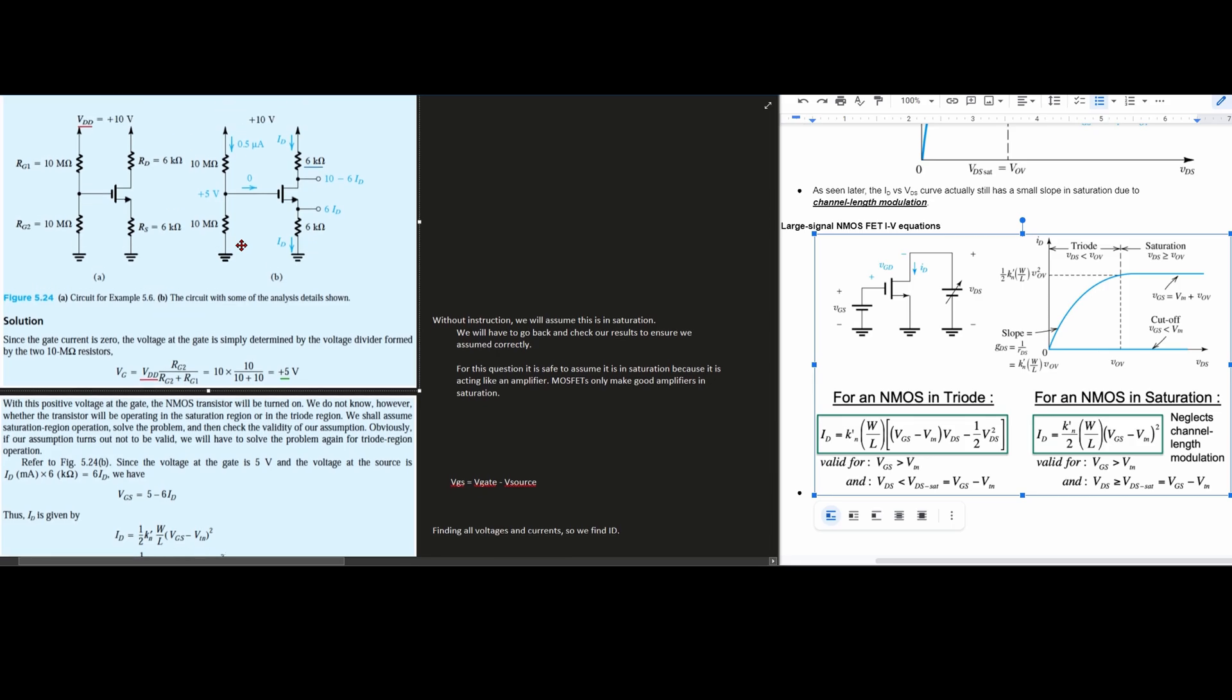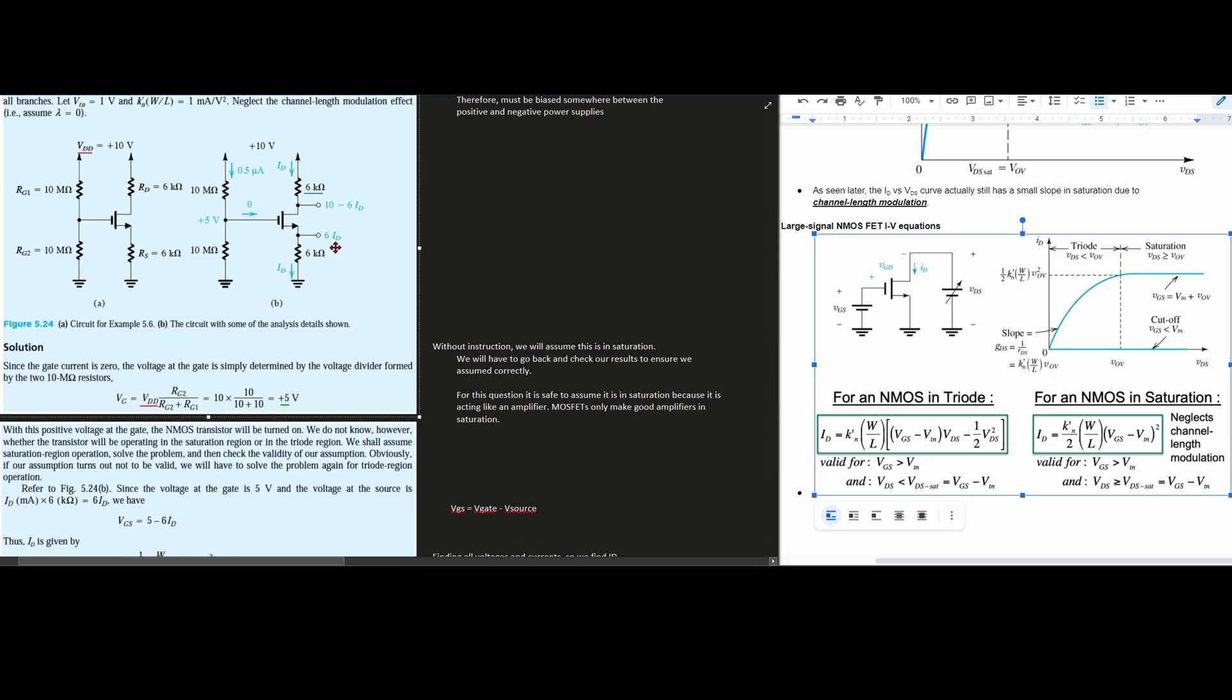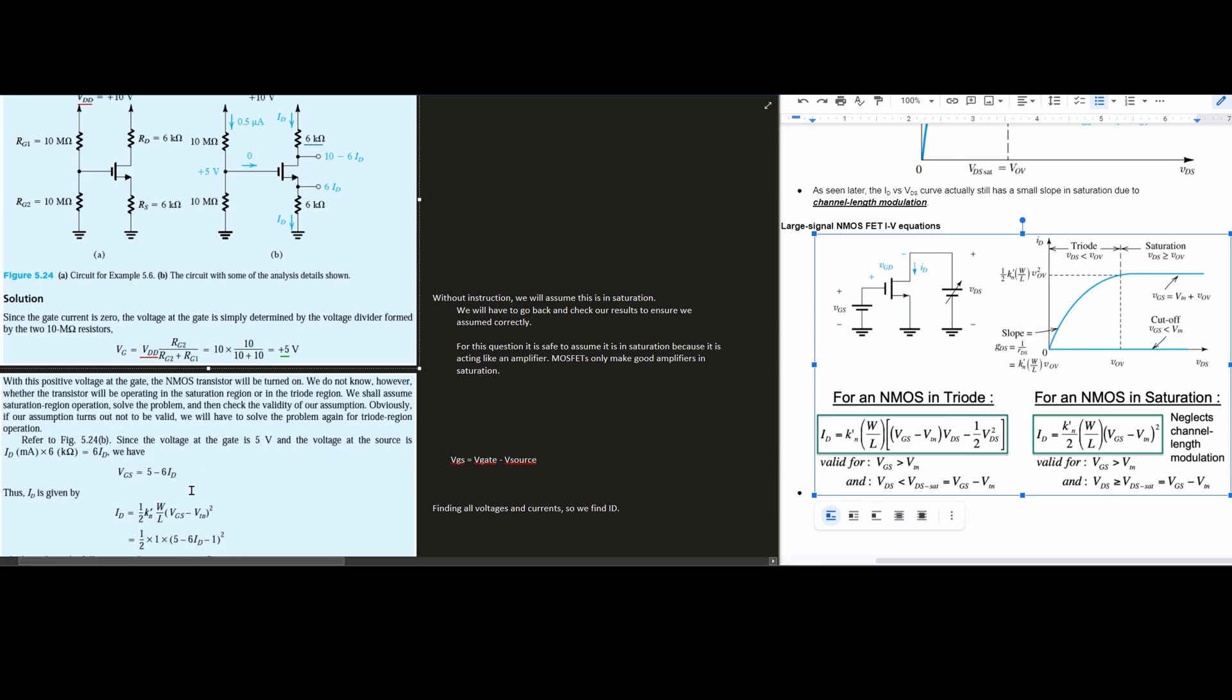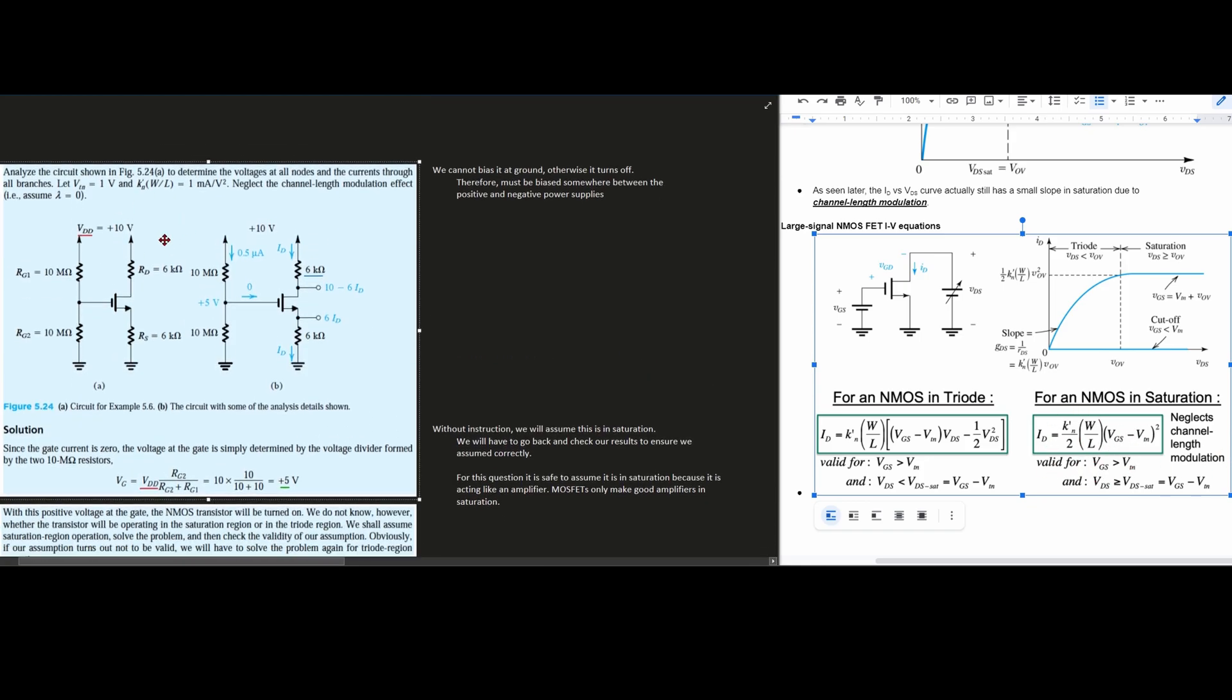And now what we're going to want to do is we're going to want to find the other values. And so what we have here is we're saying that our ID times 6 is going to be our VGS. The V gate source. So we have 5 minus our 6 times the ID. So now let's actually find our ID. Well, our ID is given to us right here for NMOS in saturation. We're going to plug in these values, and these were previously given to us up here.